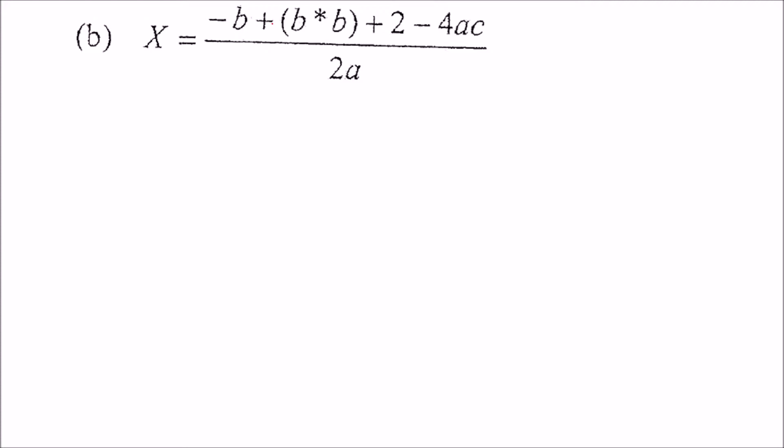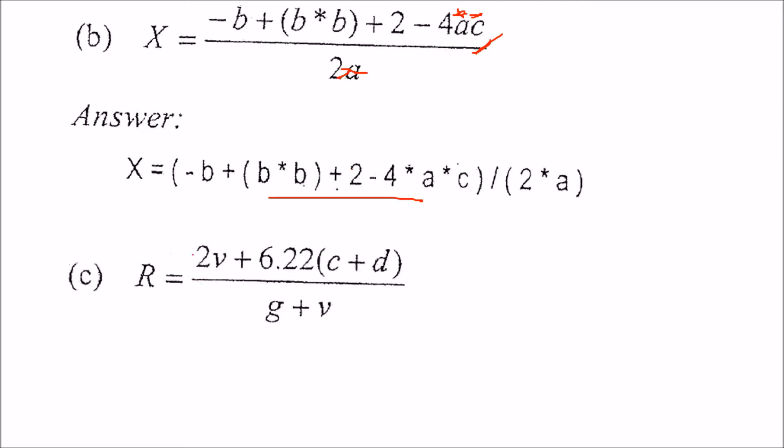Again here, minus b plus b square plus 2 minus 4 into star into star. Here also star and this is the division sign. Now you can put the bracket as per your convenience, which you want to do first. Here also you have to put a star here, star here for multiplication, then this can be converted to division sign and give it a bracket. So this is how it is done.